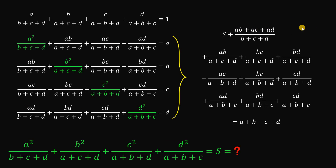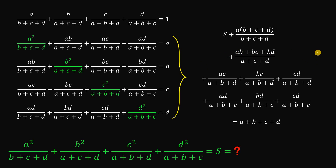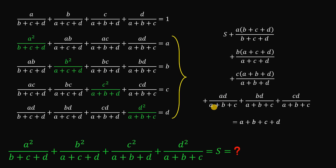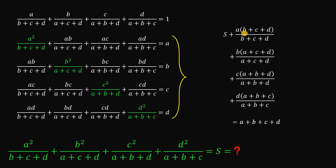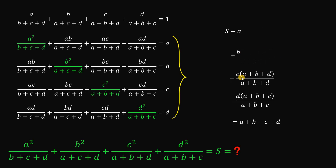Focusing on the three terms with the same denominator, we combine them and notice a common factor of a in the numerator, so we factor out a. We do the same for the next group, factoring out the common factor b, and again for the next group, and finally factor out d for the last group. Notice we can cancel the (b+c+d) in numerator and denominator — this becomes just one.